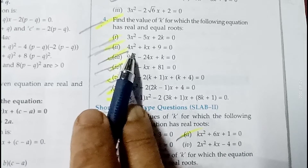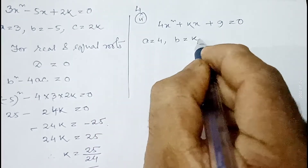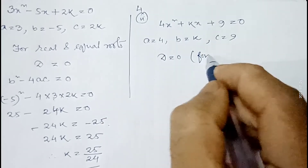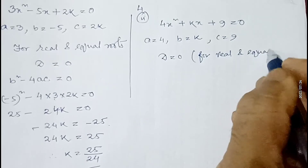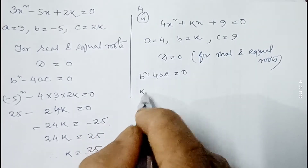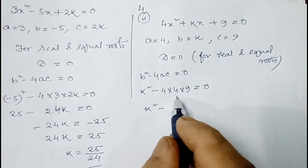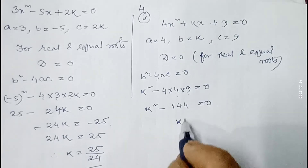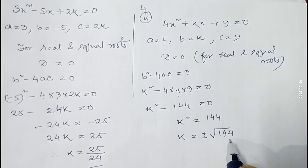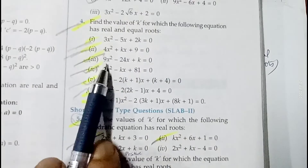Second part of question number four: 4x² + kx + 9 = 0. Here a = 4, b = k, c = 9. For real and equal roots, D = 0: k² - 4×4×9 = 0, so k² = 144, therefore k = ±12.